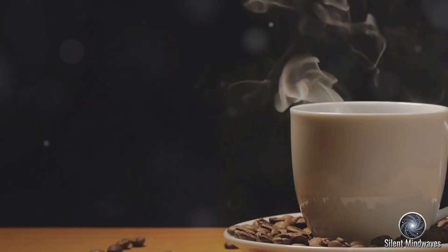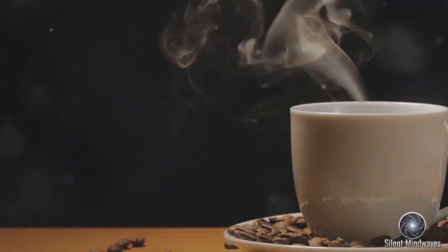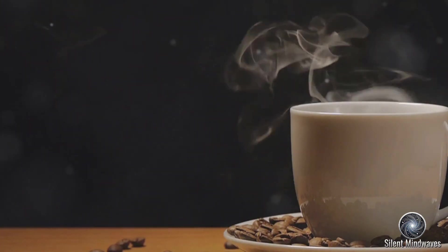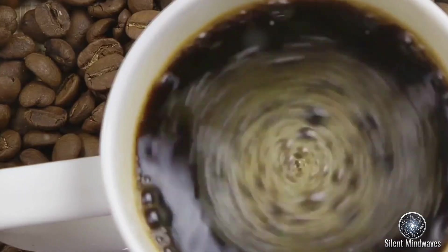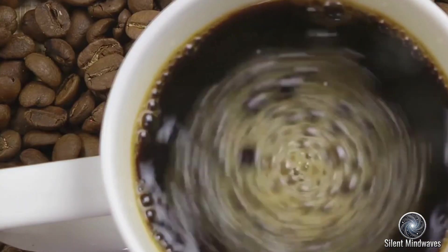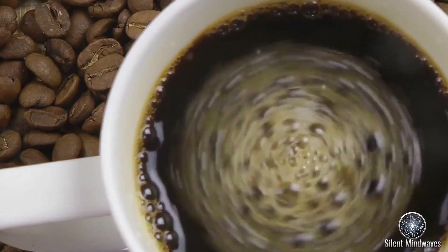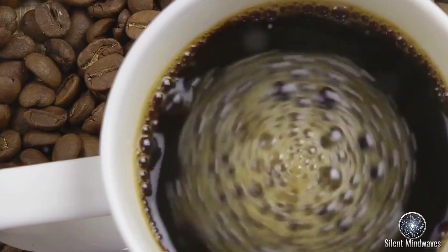Cooling coffee. A steaming cup of coffee gradually cools down as its heat energy dissipates into the surrounding air. This process is another everyday example of entropy in action. Initially, the coffee molecules possess high kinetic energy, resulting in rapid random motion.